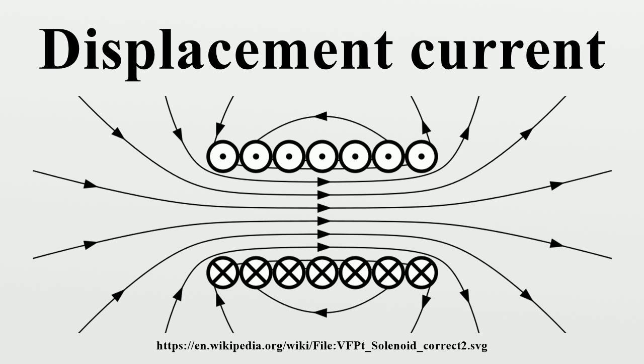Polarization results when, under the influence of an applied electric field, the charges in molecules have moved from a position of exact cancellation. The positive and negative charges in molecules separate.